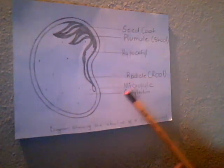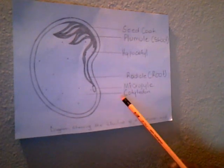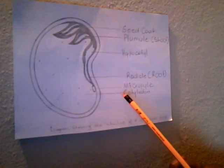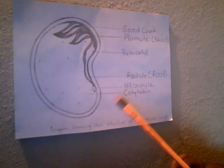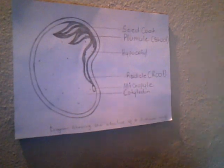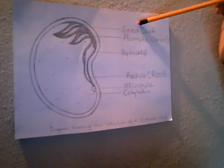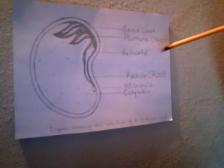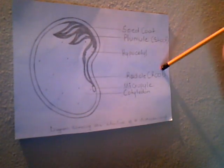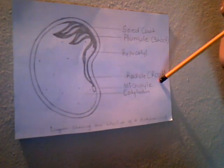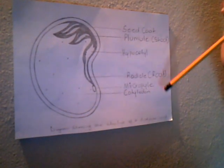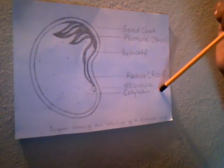The cotyledon contains food stored for the seed. To recap, we have the seed coat, the plumule, the hypocotyl, the radicle, the micropyle, and the cotyledon.